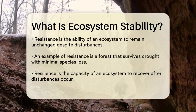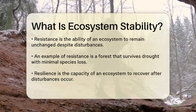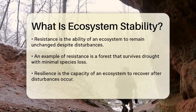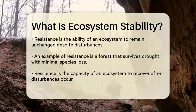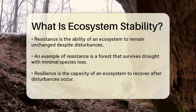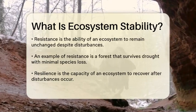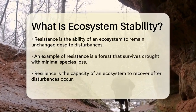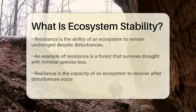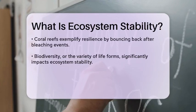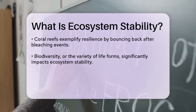There are two main aspects of ecosystem stability: resistance and resilience. Resistance is the capacity of an ecosystem to remain unchanged when subjected to disturbances. For example, a forest that can withstand a drought without significant loss of species demonstrates high resistance. On the other hand, resilience is the ability of an ecosystem to recover after a disturbance has occurred. An example of resilience can be seen in coral reefs that can bounce back after a bleaching event.